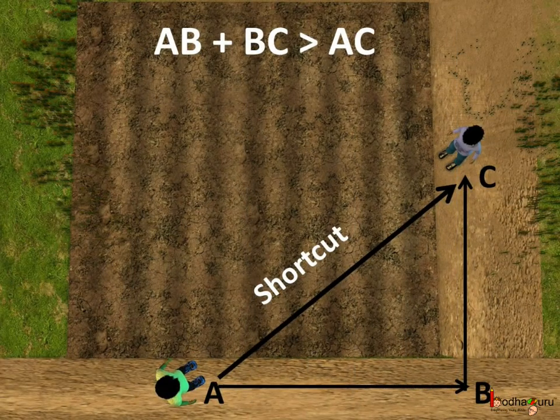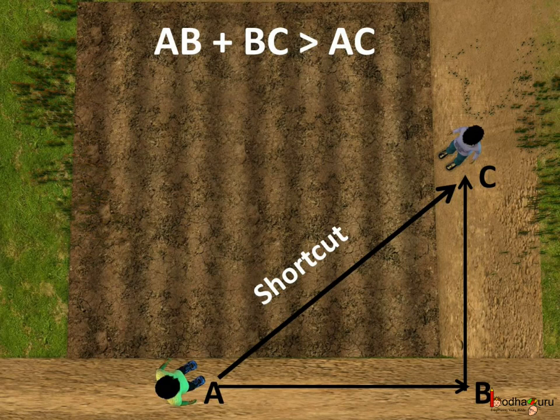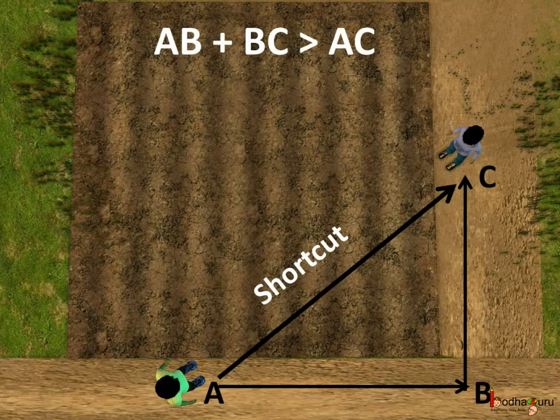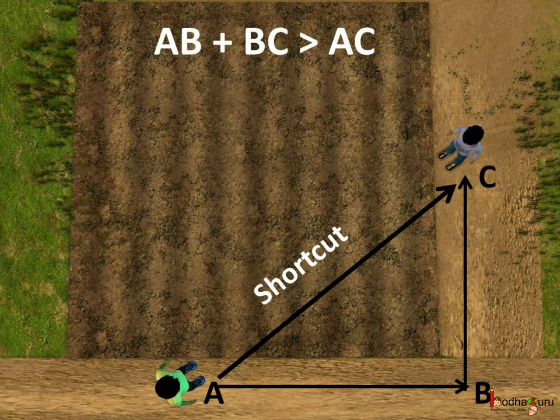So the sum of two sides of a triangle, here we have shown it by triangle ABC, then the sides AB plus BC is greater than the side AC, and this is always true.